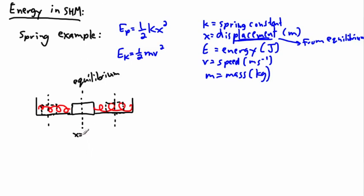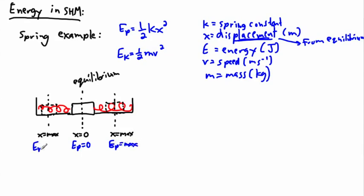Over at the right side, the displacement is at a maximum, and over at the left side, the displacement is also at a maximum. The left and right sides have the same values. If your position or displacement is zero, your potential energy is zero — so EP equals zero at equilibrium. At maximum displacement, you're at maximum potential energy. As the mass stops at the extreme right position, its speed or velocity is zero because it stops just before coming back.